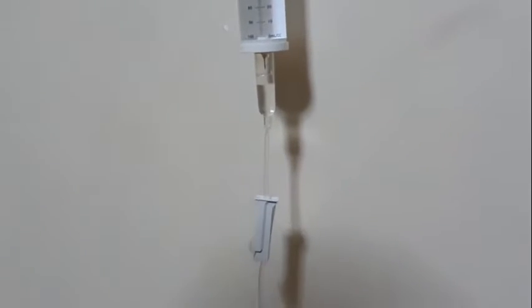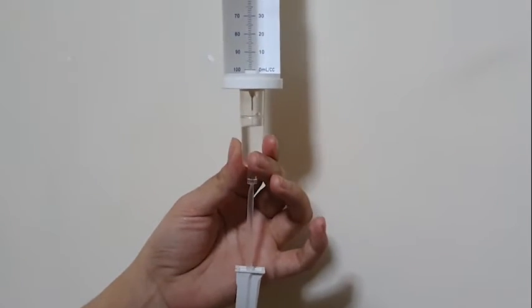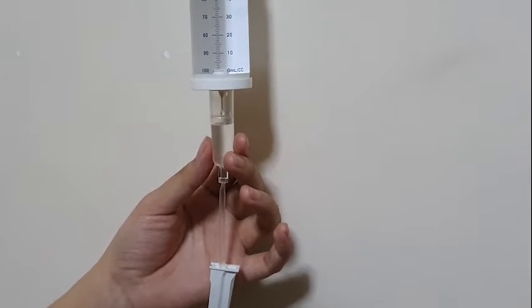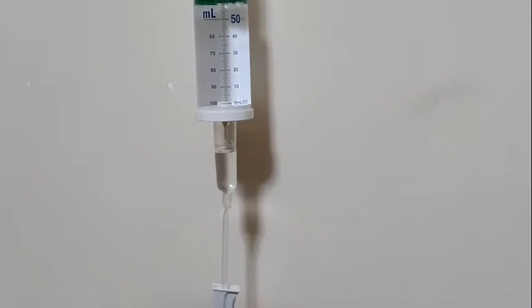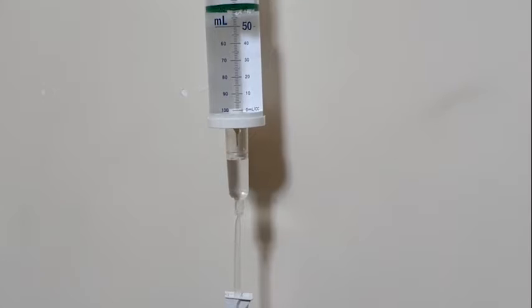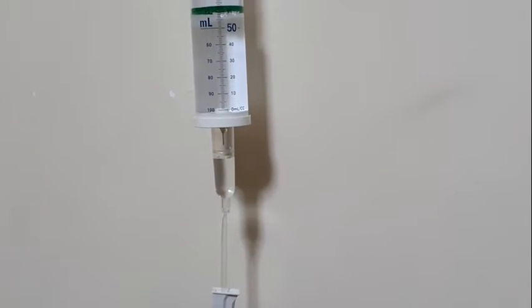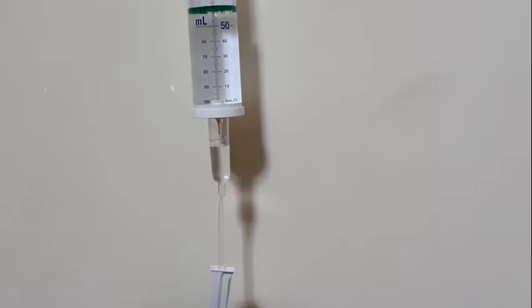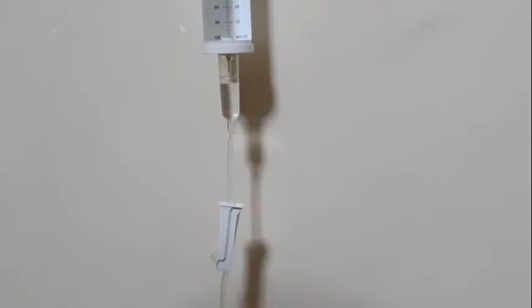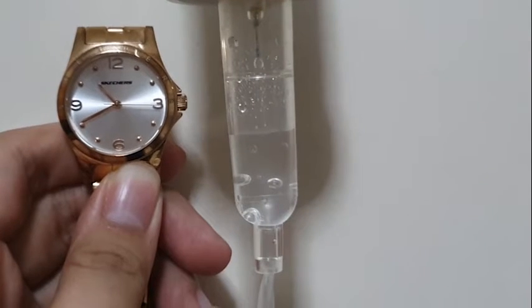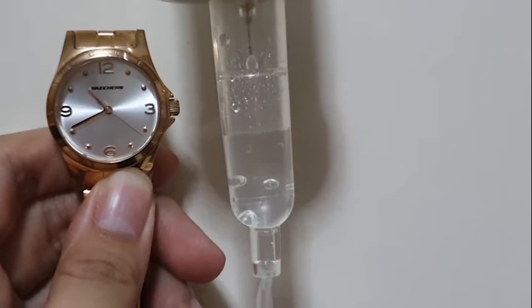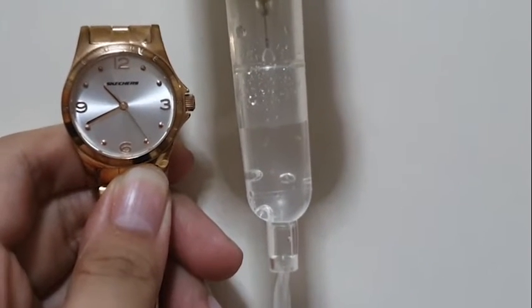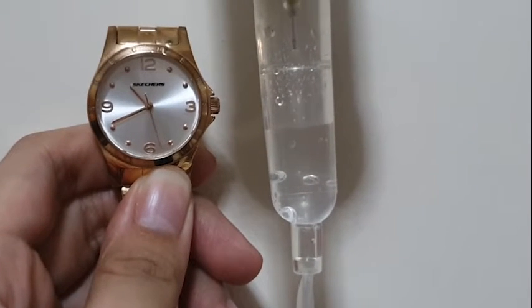Now I will be squeezing the drip chamber gently until it is half full of the IV solution. This reduces risk of air entering the tubing. If chamber is completely filled, we cannot observe and regulate drip rate. Now I will be regulating the flow rate according to order. Here is one full minute of the regulation of the flow rate according to the order. This is 83 micro drops per minute.